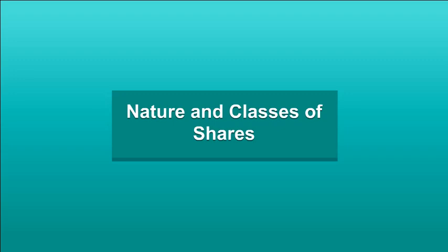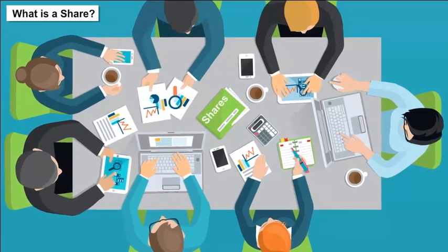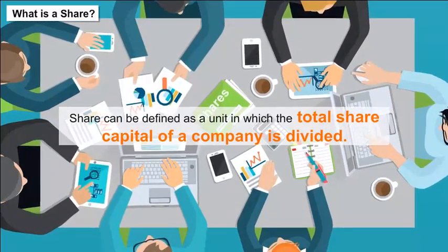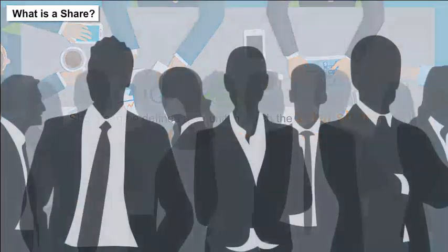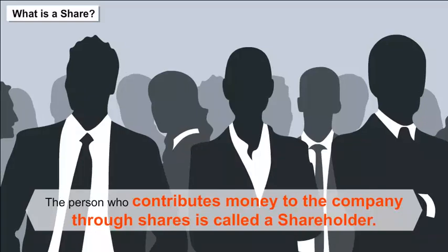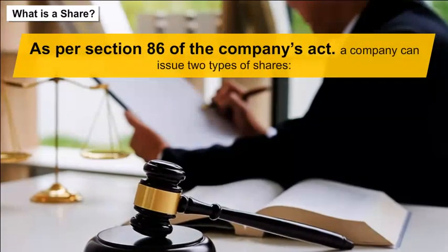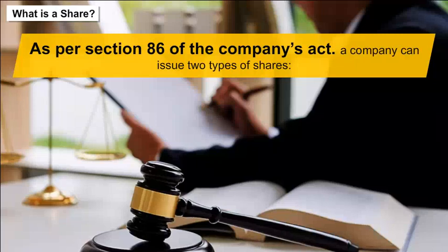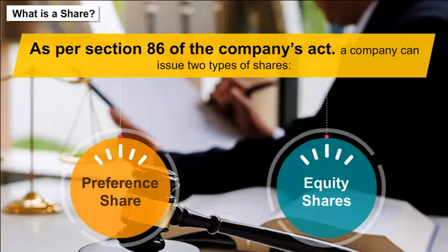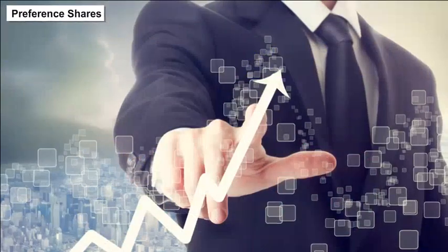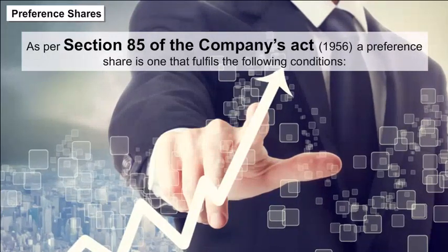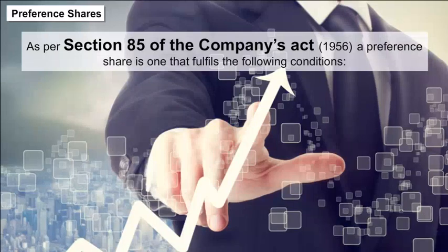Nature and Classes of Shares: A share can be defined as a unit in which the total share capital of a company is divided. The person who contributes money to the company through shares is called a shareholder. As per section 86 of the Companies Act, a company can issue two types of shares: Preference Shares and Equity Shares. As per section 85, a preference share fulfills the following conditions.